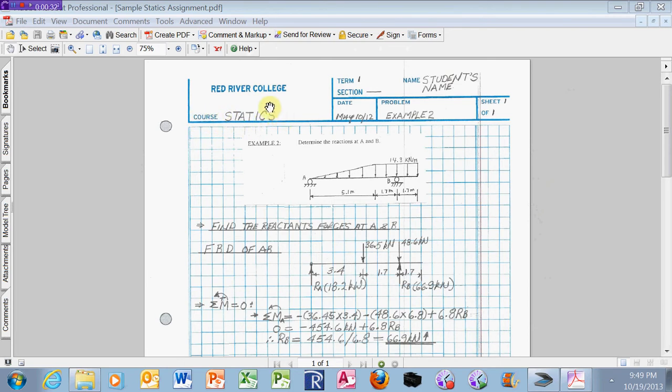The course name goes in this location. If you're in the day program, it's statics and strength of material. If you're in distance education, it's statics or strength of material. One of the two goes into this location. You have to print with block letters.